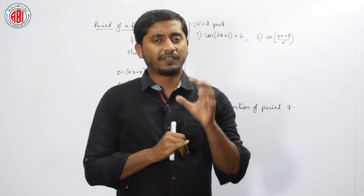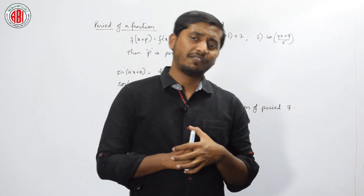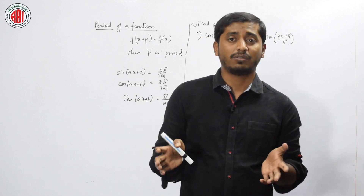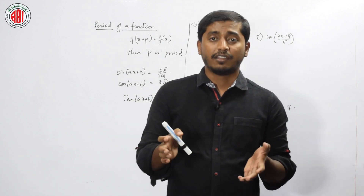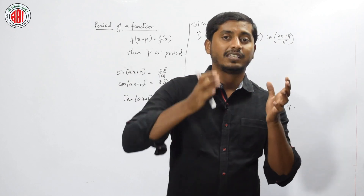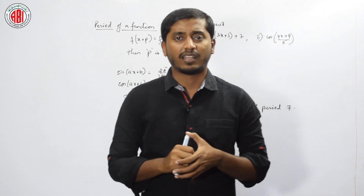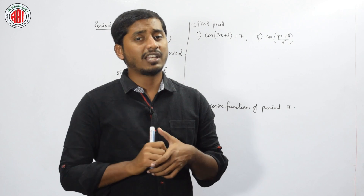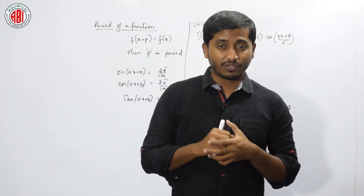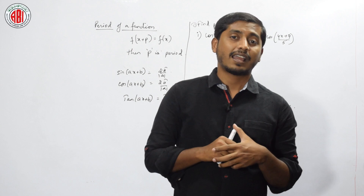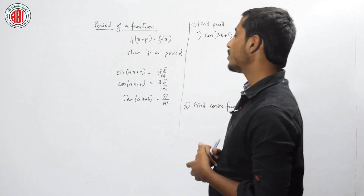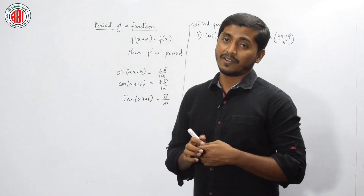We have seen the different values for these functions. We have placed the values from minus pi by 2 to plus pi by 2, starting from 0, going to 90, 180, 270, 360. We can present many values and find what is the range of those values. Before that, let us have a small topic: what is the period of a function?